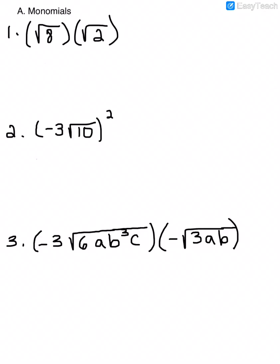In these first few examples, we'll be multiplying monomials. In number 1, we have the square root of 8 times the square root of 2. Since both of those numbers are under the radical symbol, we can multiply them together, so we would get the square root of 16. We need to make sure that our answer is simplified — the square root of 16 is 4, so that would be our answer.